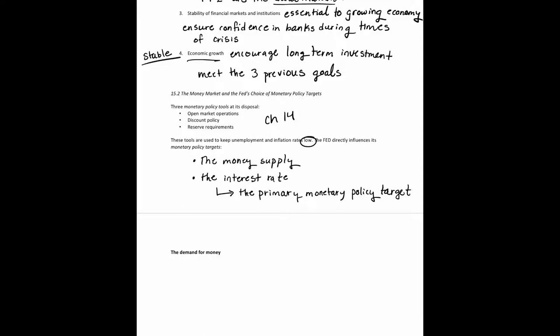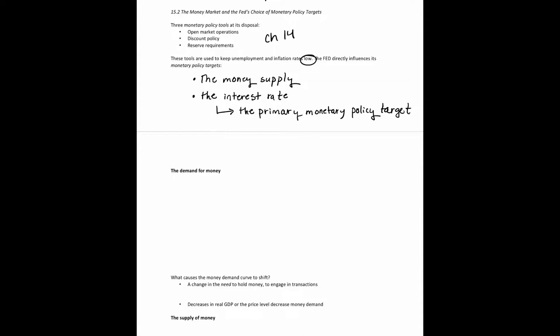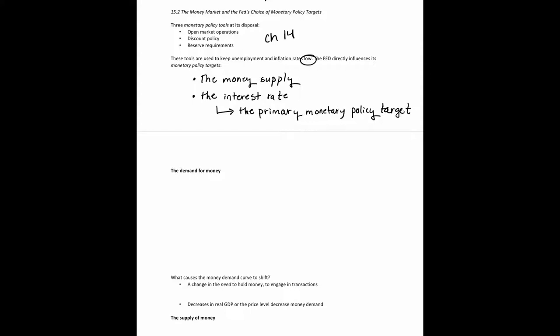The money supply and interest rates are related in an important way: higher interest rates result in a lower quantity of money demanded. We can graph this out with interest rates on the y-axis (denoted 'i') and quantity of money on the x-axis (denoted 'M'). Higher interest rates mean alternatives to holding money look more attractive — instead of keeping cash on hand, you'd put money in the bank or invest in U.S. Treasury bills. That's why the demand for money is downward sloping.